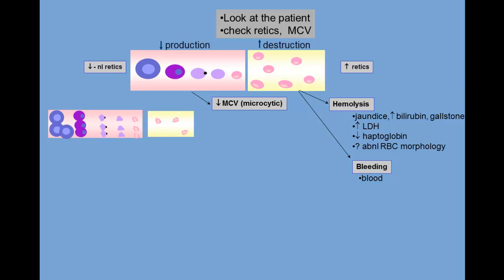On the globin side, we're dealing with the various thalassemia syndromes — genetic disorders of globin production. When you see a patient with anemia, low reticulocyte count, and low MCV, think iron deficiency. In many parts of the world, thalassemias are also extremely common. Lower down on your list would be the anemia of chronic inflammation or sideroblastic anemia.